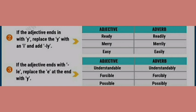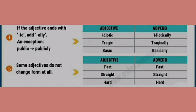If the adjective ends in -ic, the syllable -al is usually added before the -ly ending. Exception: public → publicly. For example: idiotic → idiotically, tragic → tragically, basic → basically. Some adjectives do not change form at all — for example: first → first, straight → straight, hard → hard.